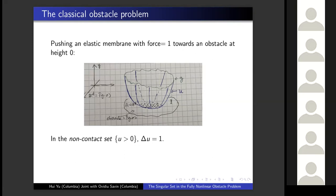Then you keep pushing, and after your membrane comes into contact with the obstacle, there's nowhere you can go — you cannot penetrate the obstacle. So in that region you have to follow the shape of the obstacle, which is flat. In the contact set, Laplace of U is zero. The most interesting feature is there is a jump in the right-hand side of the equation, and this jump happens along an interface that is a priori unknown to us. This is a typical free boundary problem.